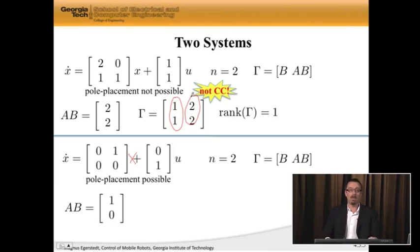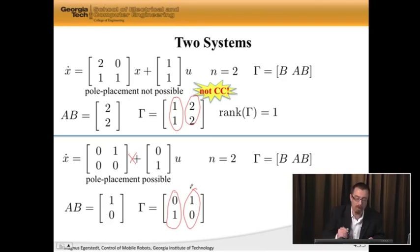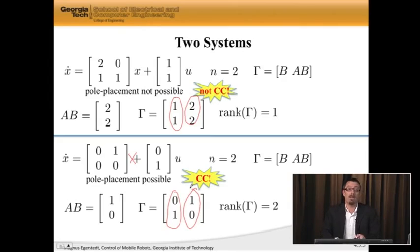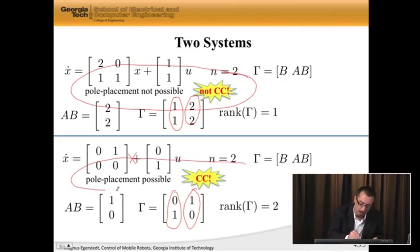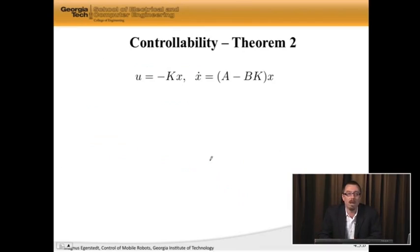Well, looking at the lower system, well, this is a, b. This is my gamma, 0, 1, 1, 0. There is no way I can multiply this column by anything to get this column. So the lower gamma has rank equal to 2, because that's two linearly independent columns. So it is completely controllable. So here, pole placement, not possible, not completely controllable. Here, pole placement possible, completely controllable.